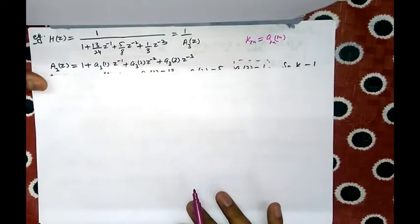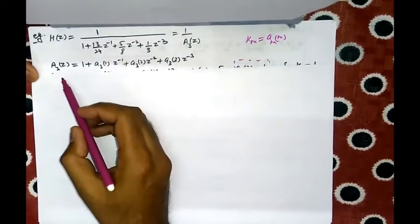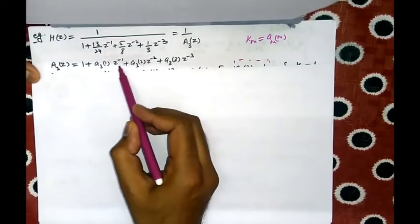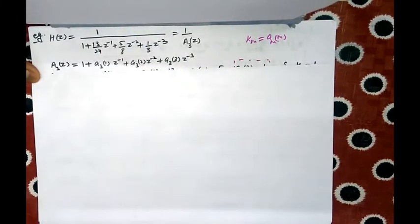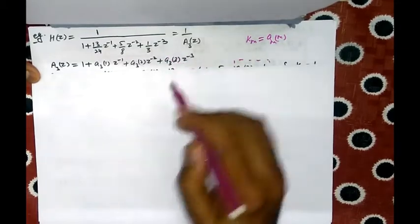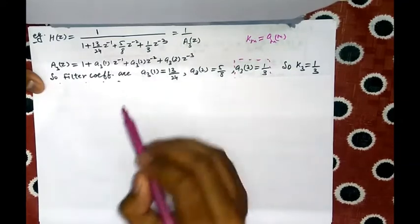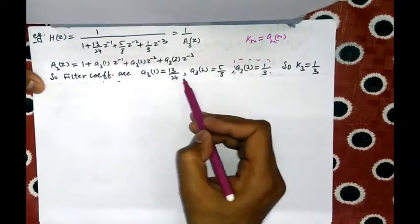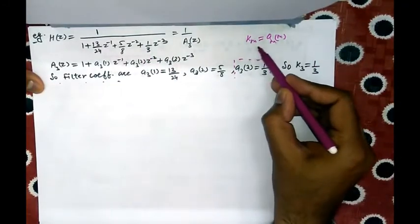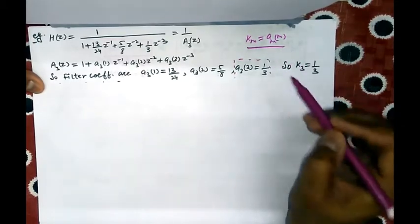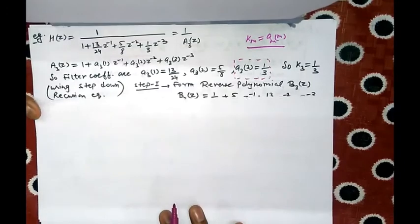The general equation of A3(z) is: A3(z) = 1 + a31·z⁻¹ + a32·z⁻² + a33·z⁻³. Comparing these equations, we get the filter coefficients: a31 = 13/24, a32 = 5/8, and a33 = 1/3. We also know that kM = aMM, so k3 = a33 = 1/3, where m = 3.